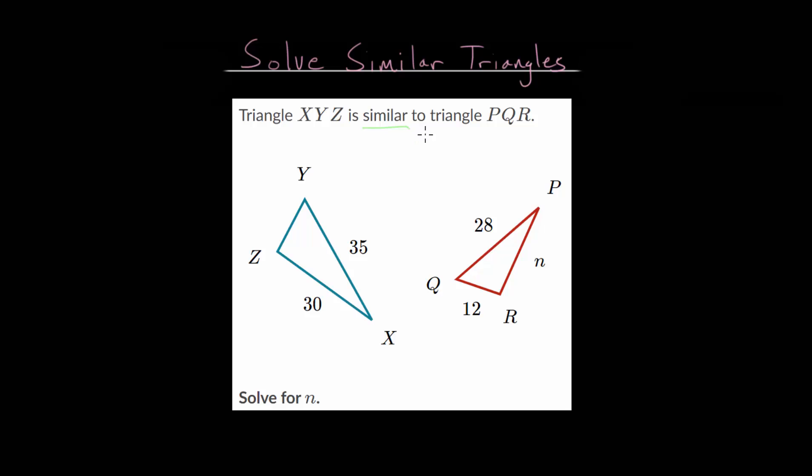And remember that with similar triangles, they have the same shape, but they are usually different sizes. Or in other words, if we look at the angle measures in these two triangles, they have three sets of equal angles.